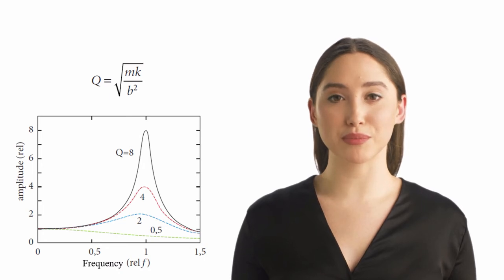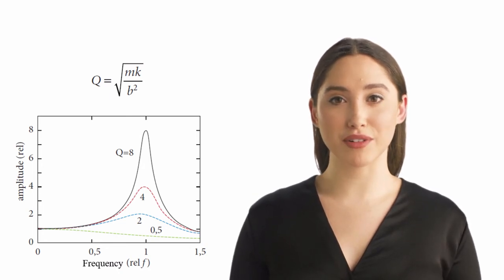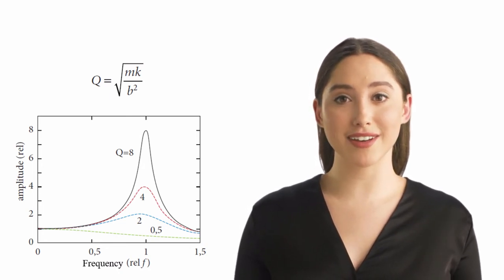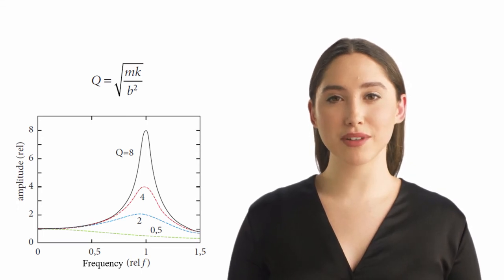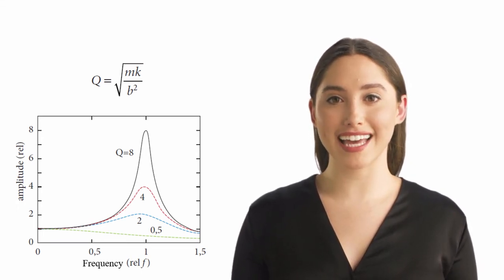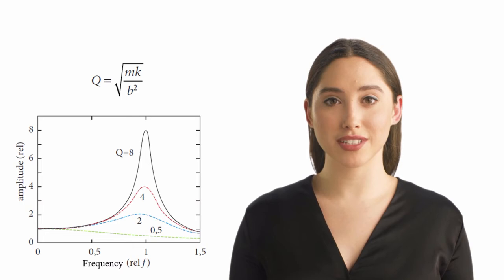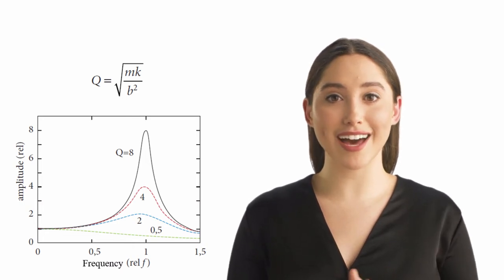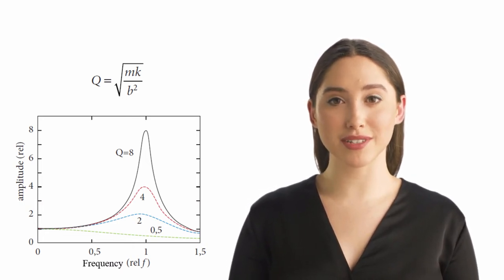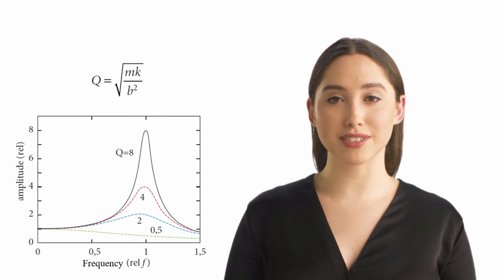That the students themselves are responsible for their own learning, one sees from the fact that the student-specific m and k are above the fraction line. The more flexible one is, k, the faster the learning becomes, and with a portion of inertia, m, the effects become larger. The latter may seem paradoxical.